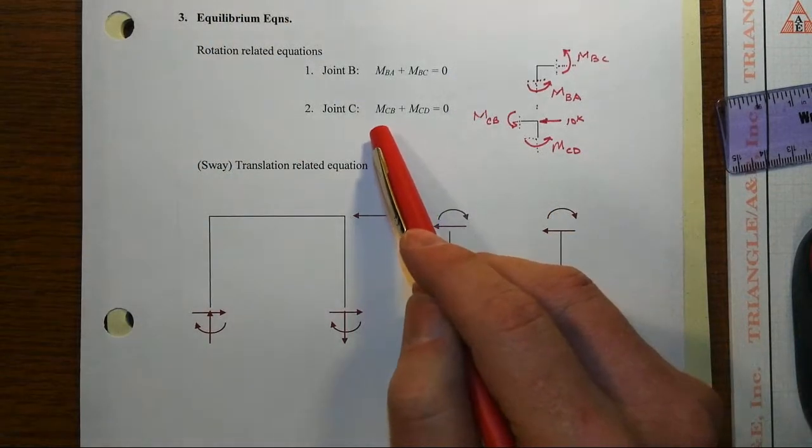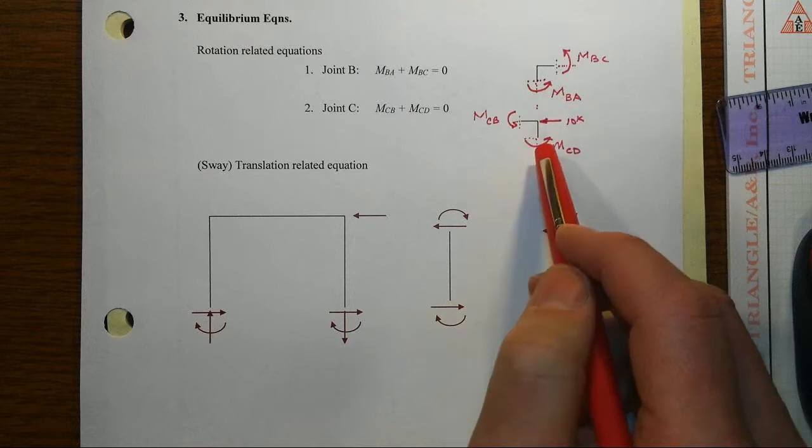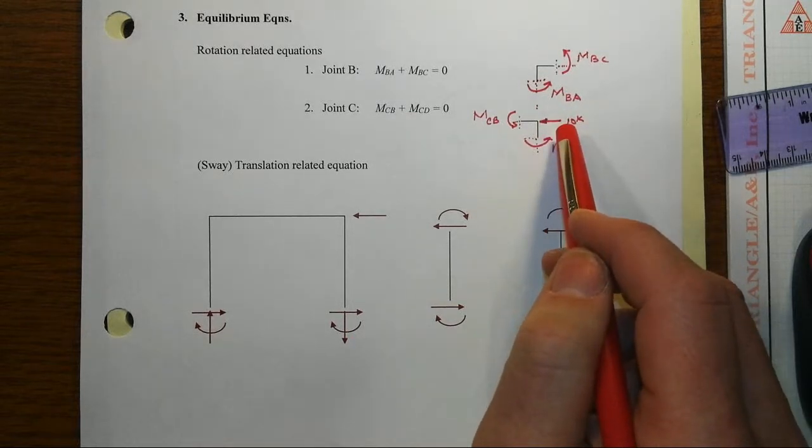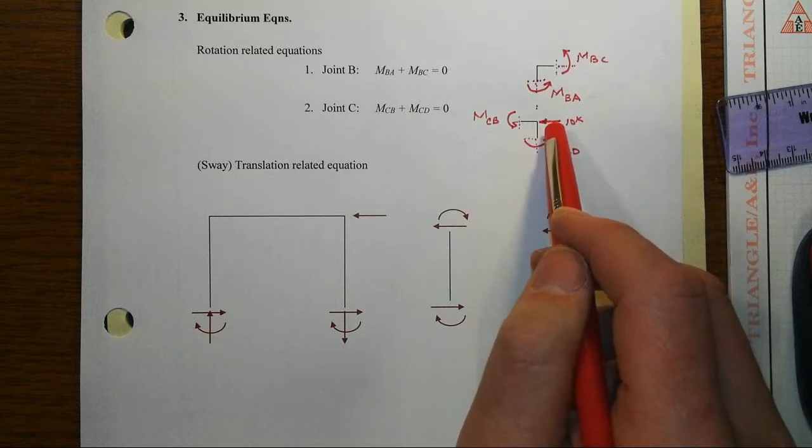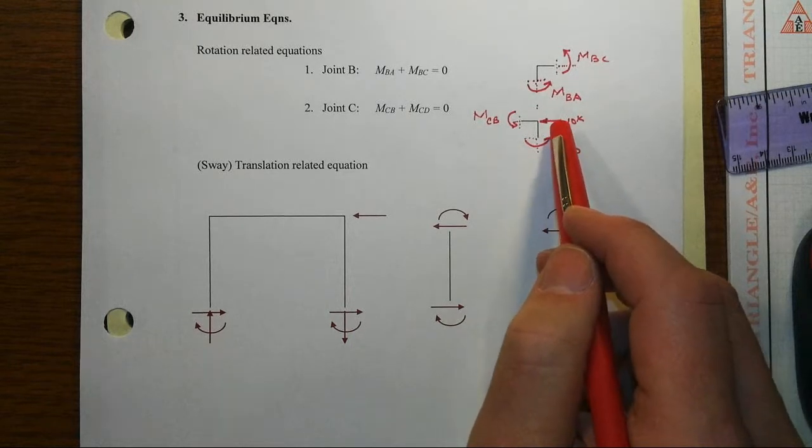We do the same thing for both joints, we get the same thing. The only thing that's kind of new in this case is because we do have a lateral load applied at that joint, I've gone ahead and shown it just to remind myself that it actually exists.